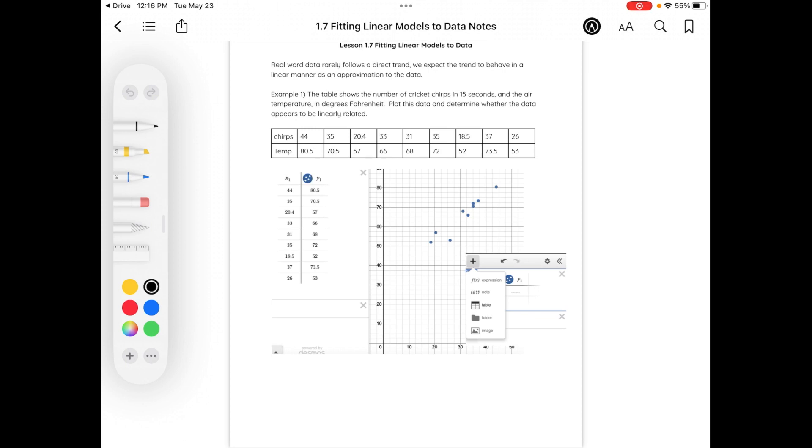In order to do this within Desmos, I clicked on the plus button in the top left-hand corner of my screen and then I inserted a table. Within my table, I let my x values represent my chirps and my y values represent the temperature. And again, the temperature is in fact in Fahrenheit.